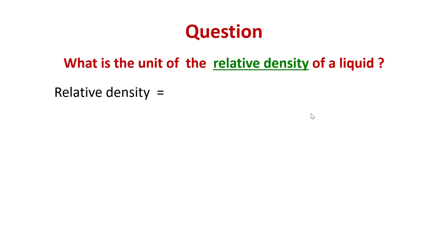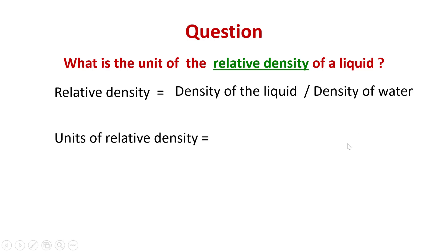The relative density of a liquid is defined to be the ratio of the density of liquid to the density of water. Hence, from this definition, we see that the units of relative density is given by the units of density over units of density, which equals kg per meter cubed over kg per meter cubed, which will work out to be 1.